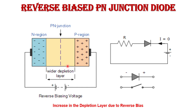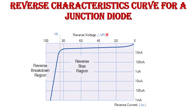The reverse saturation current depends on temperature. In the reverse bias characteristic of a PN junction diode, the reverse characteristic is a graph of reverse voltage (VR) versus reverse current (IR). Both the magnitude of reverse voltage and reverse current are negative. When reverse bias polarity is applied, a small leakage current flows due to minority carrier movement. As reverse voltage increases, this reverse leakage current flows and is treated as negative current, so the characteristic appears in the third quadrant of the VI curve.